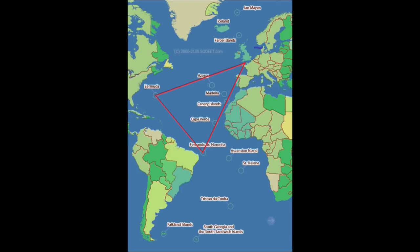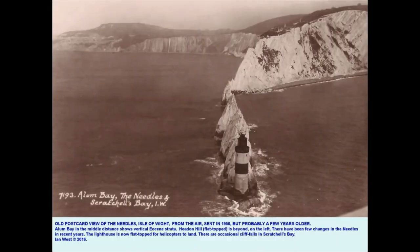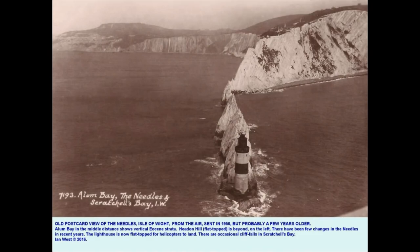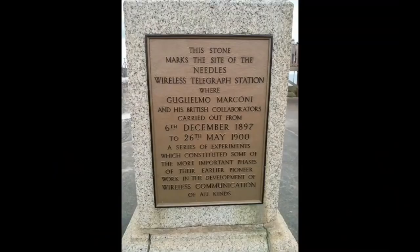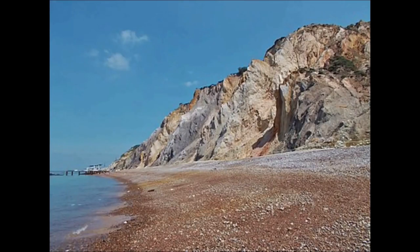The Isle of Wight, just off the coast of southern England, has a number of star forts and lighthouses. The Needles Lighthouse stands 109 feet tall on the outermost chalk pillar and was built out of granite blocks in 1859. It is now flat-topped for helicopters to land. What is described as the world's first long-distance radio signal was sent by Marconi from Alum Bay beside the Needles in 1897. The sand there includes extremely pure white silica, an important component for enhancing radio frequency transmission.